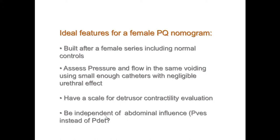In my practice, I achieve negligible obstructive effect with catheters smaller than 5 French, which are commercially simple to find. I use 4 French or 3.5 French pediatric or neonatology esophageal catheters — two catheters, one for filling and one for measuring. During the voiding phase, I remove the filling catheter and leave only one 3.5 French catheter in the urethra. In a large series, we found no obstructive effect, so there is no longer a point in using free flows from a separate micturition.